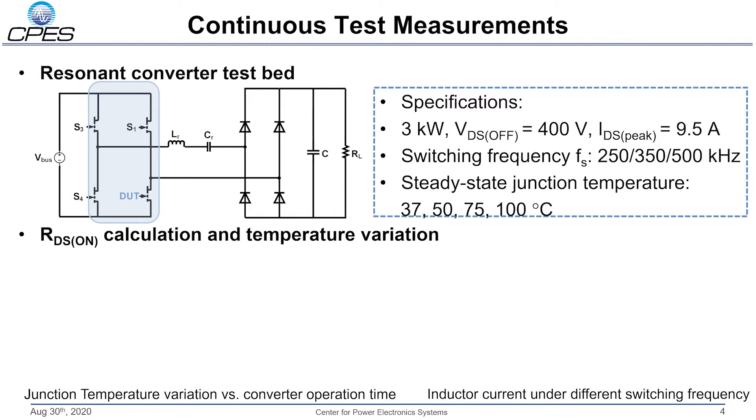A 3-kilowatt series resonant converter was used to conduct the test. Three switching frequency values and four junction temperature conditions were tested. This converter has sinusoidal currents as shown in the bottom right figure. The RDS(ON) calculation period is chosen near the peak area, which has lower dI/dt. This diminishes the effect of voltage drop due to loop inductance, which may impact measurement accuracy.